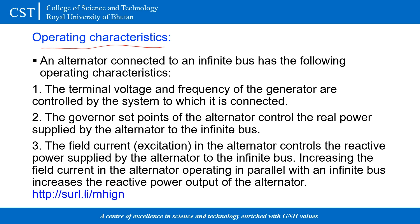The terminal voltage and frequency of this generator are controlled by the system itself — they remain constant even with removal of load, removal of any generator, or addition of a generator. The governor set point controls the speed of the alternator, which controls the real power. The field current in the alternator controls the reactive power — increasing or decreasing the excitation current will increase or decrease the reactive power accordingly.